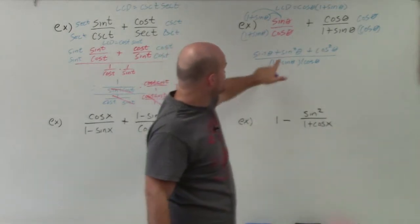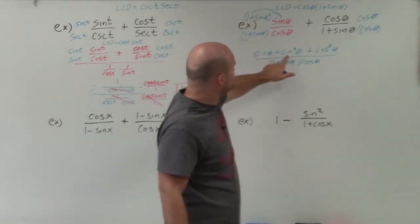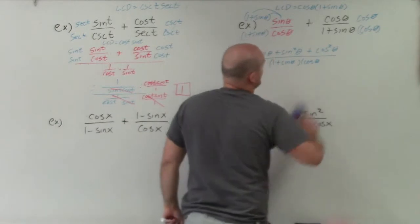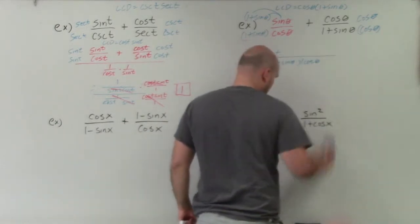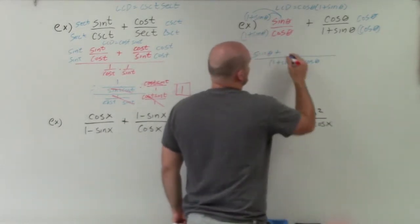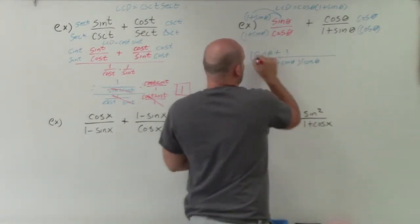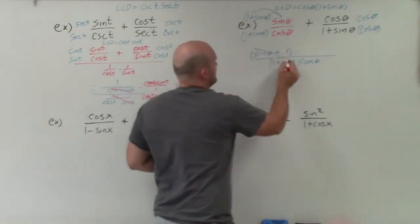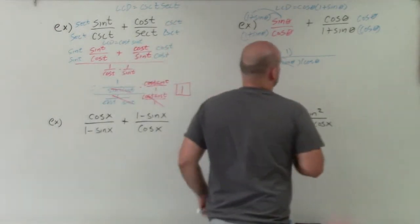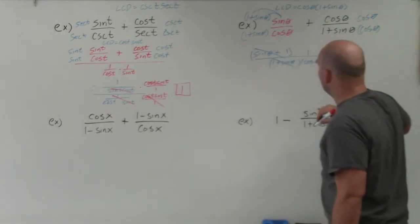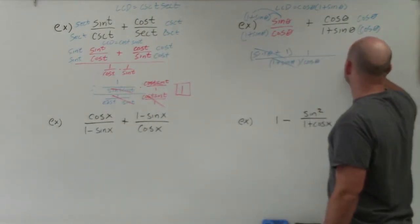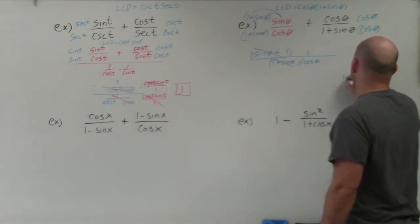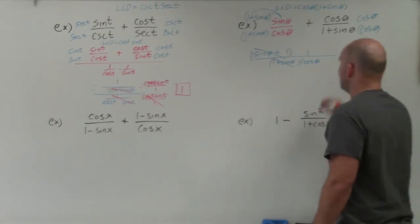We see that we have sine squared plus cosine squared, which by our Pythagorean identity equals 1. Now, sine of theta plus 1 is the same thing as 1 plus sine of theta, so those divide out, leaving a 1 in the numerator. Therefore, my final simplified answer is 1 over cosine of theta, or we can rewrite that as secant of theta.